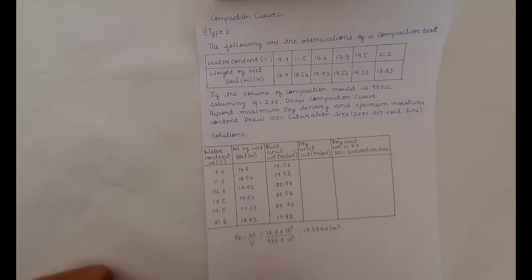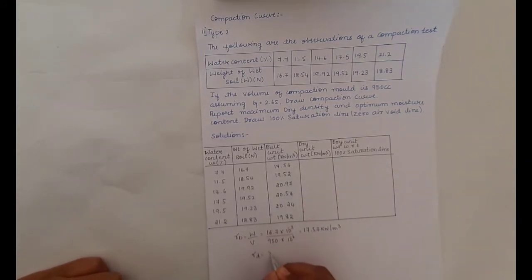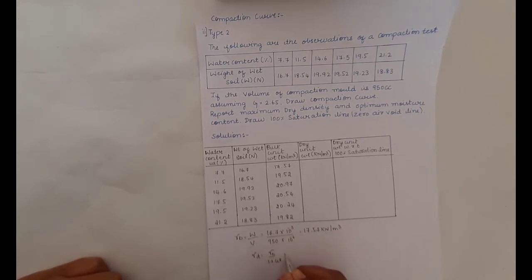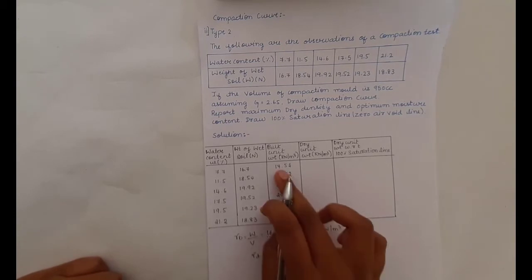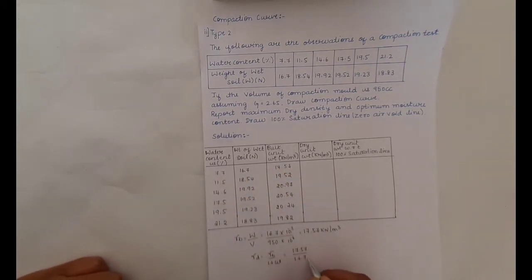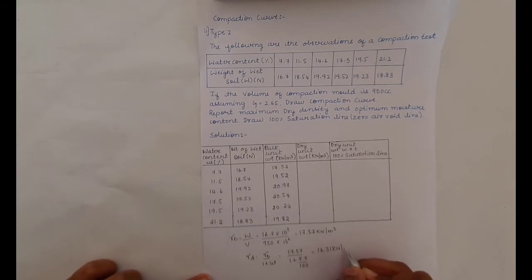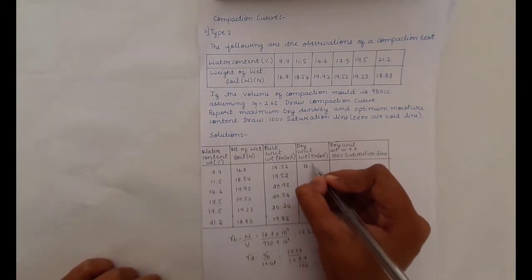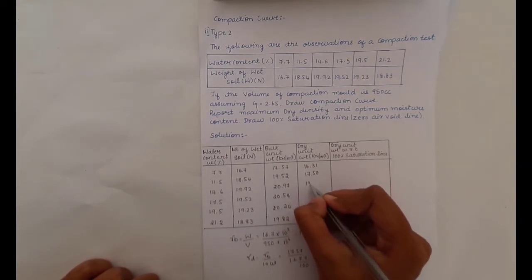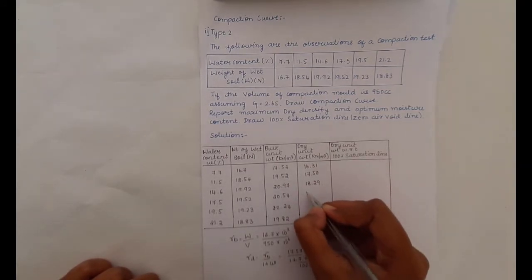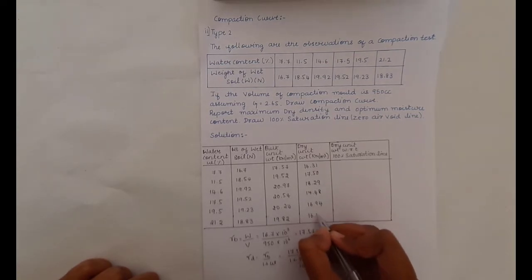After calculating the bulk unit weight, the next step is to calculate the dry unit weight. The formula is: dry unit weight equals bulk unit weight divided by (1 + water content). Substituting 17.57 divided by (1 + 7.7/100) gives 16.31 kN/m³. Calculating for all trials: 16.31, 17.54, 18.29, 17.48, 16.94, and 16.35 kN/m³.